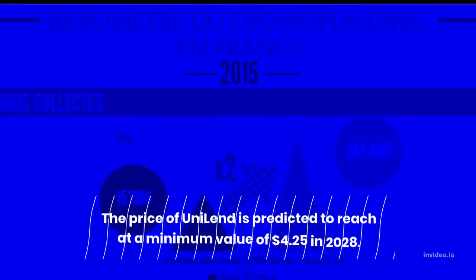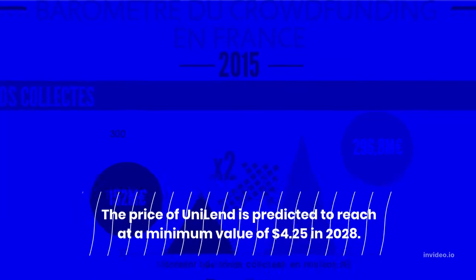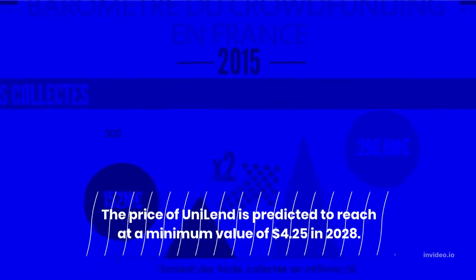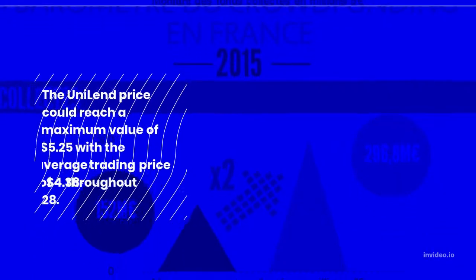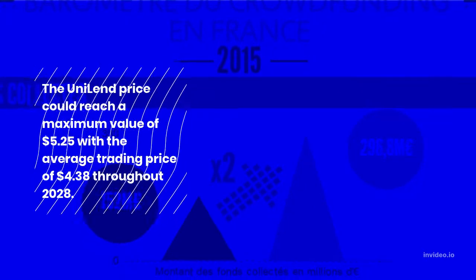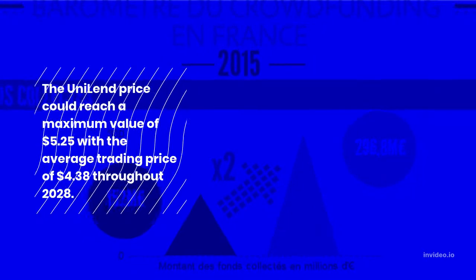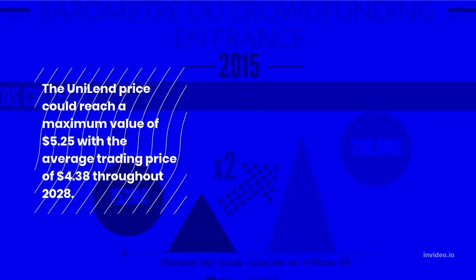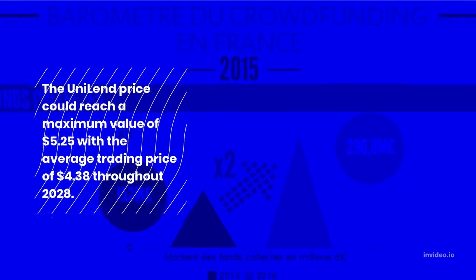Uniland Price Prediction 2028: The price of Uniland could reach a maximum value of $5.25 with the average trading price of $4.38 throughout 2028.